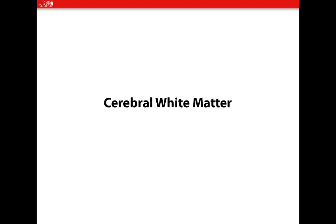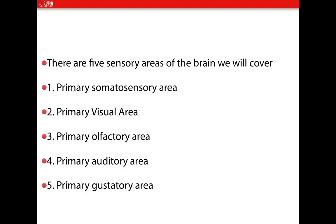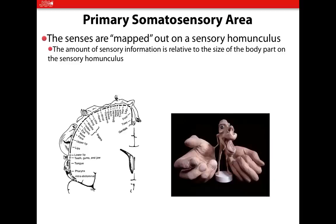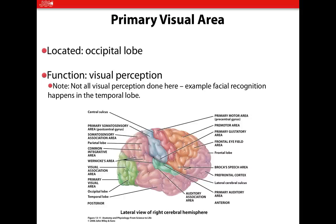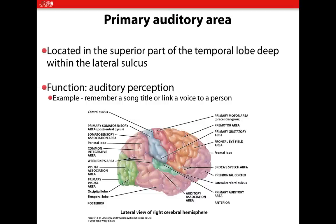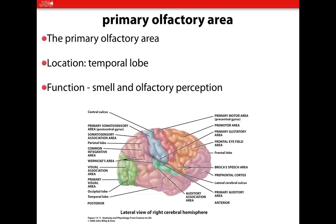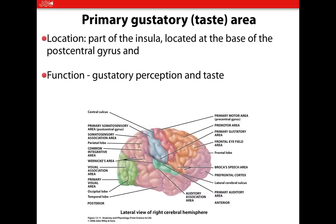For the test, you should know the five sensory areas of the brain. Primary somatosensory area we already talked about with the postcentral gyrus. Primary visual area is in the occipital lobe. Auditory area is in the temporal lobe — makes sense, think of where the ears are. Gustatory area is also present. For these on the test, just know the location and the function.